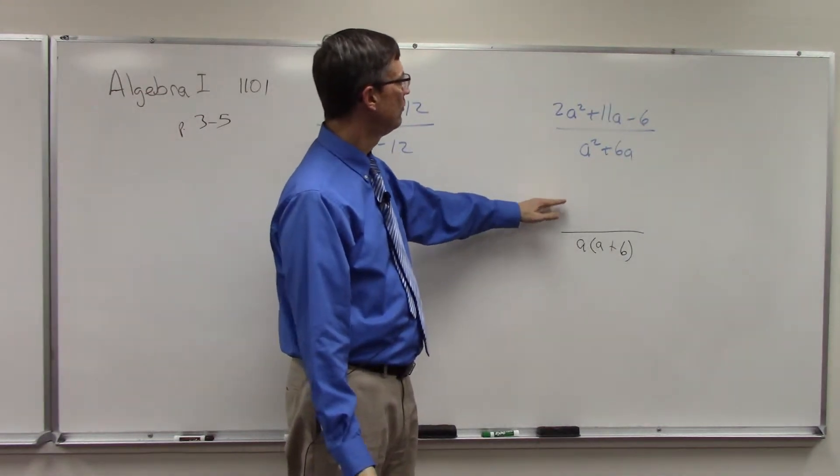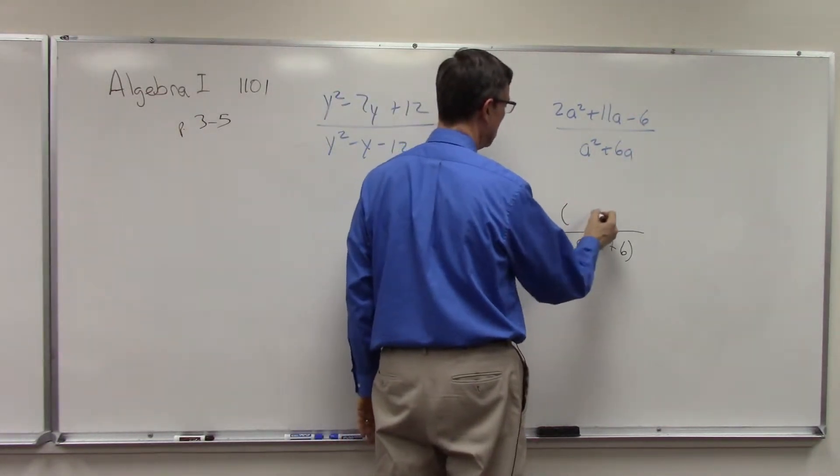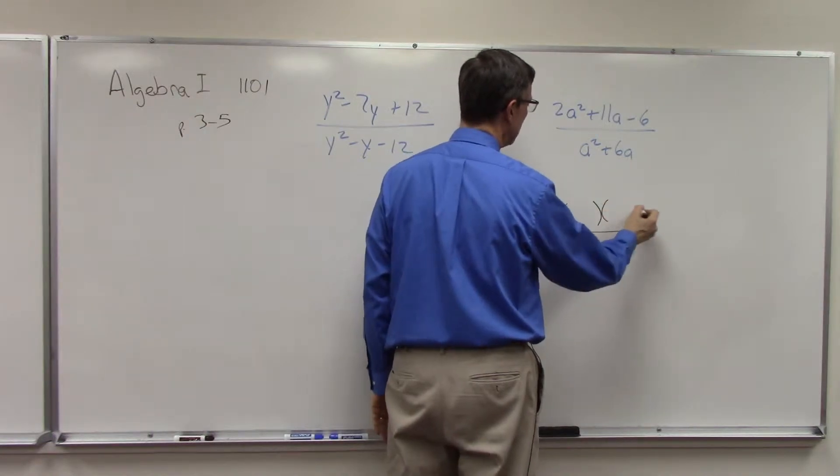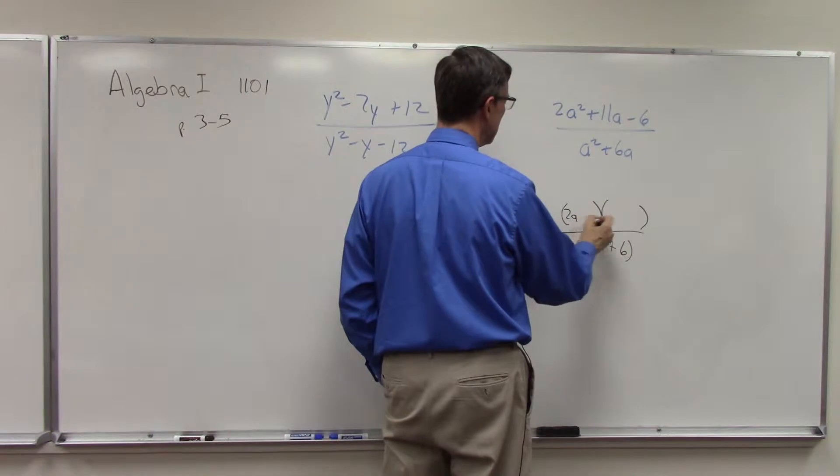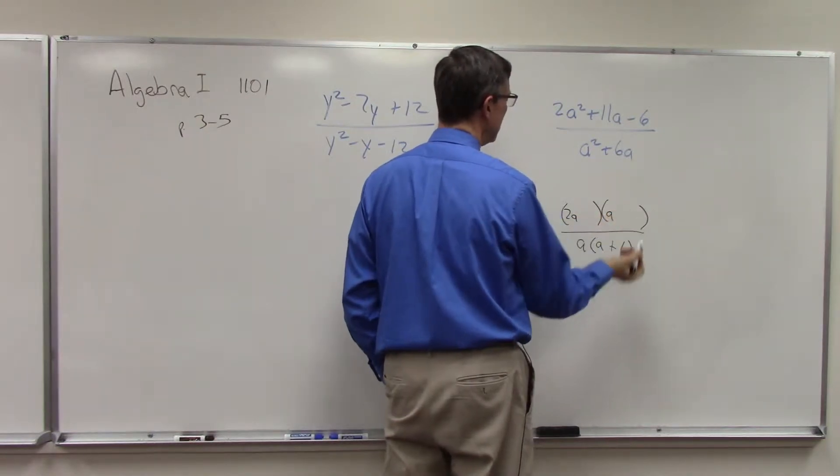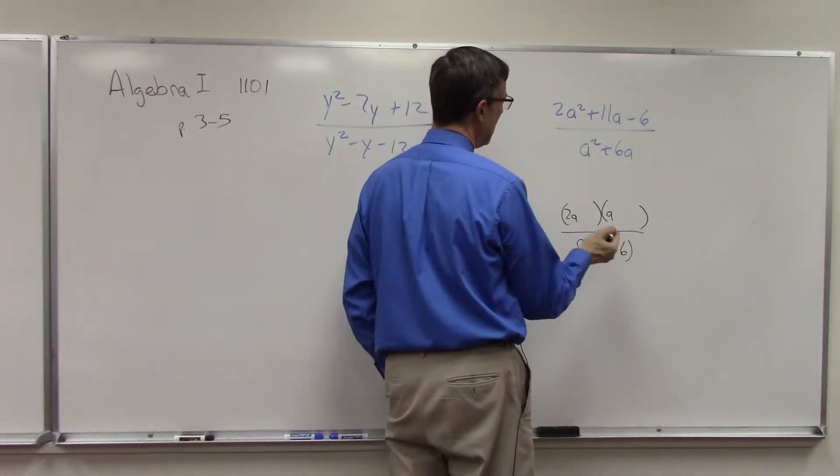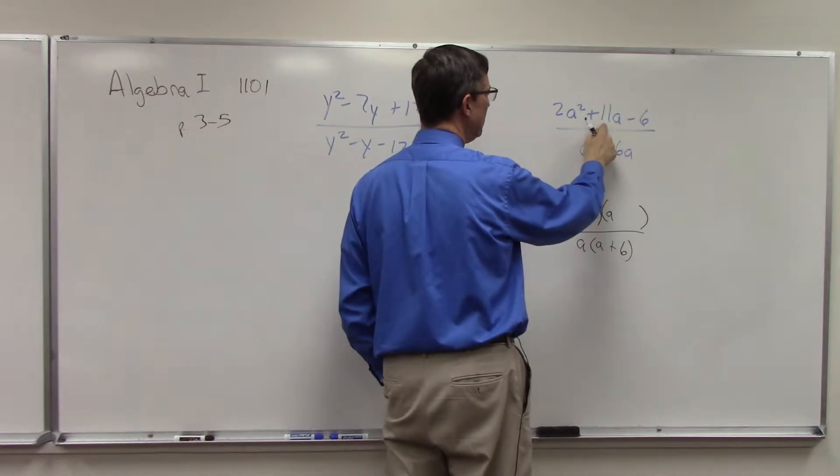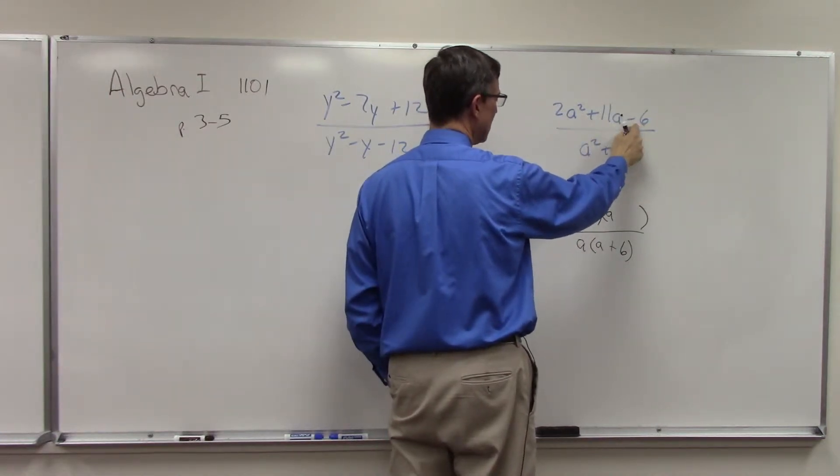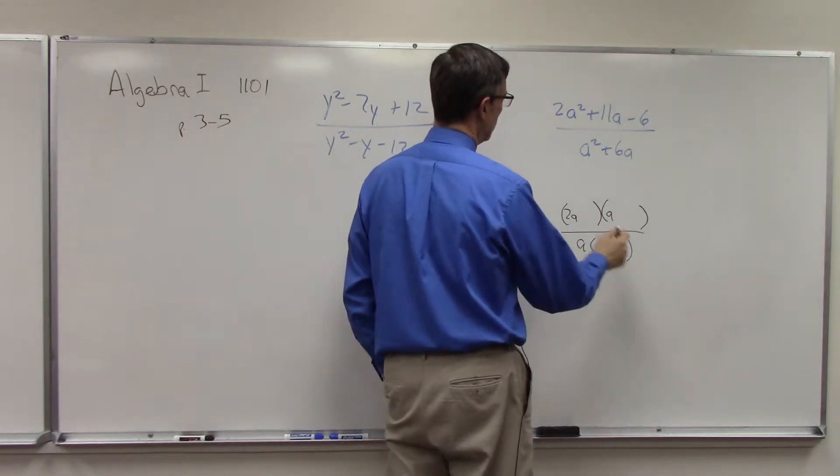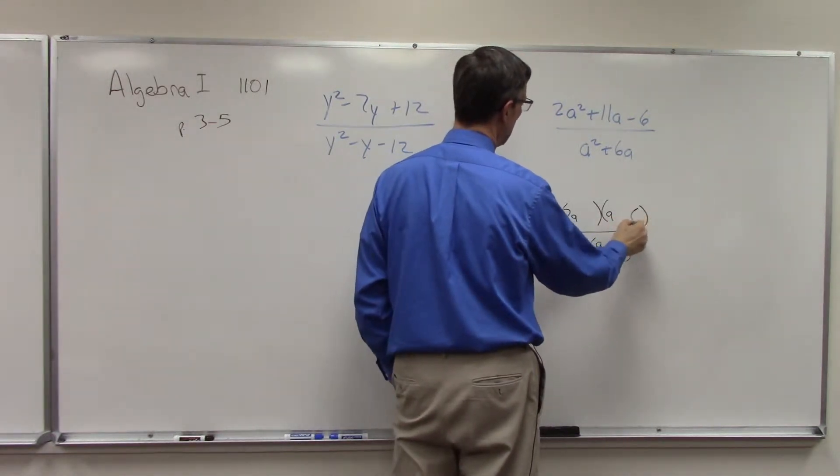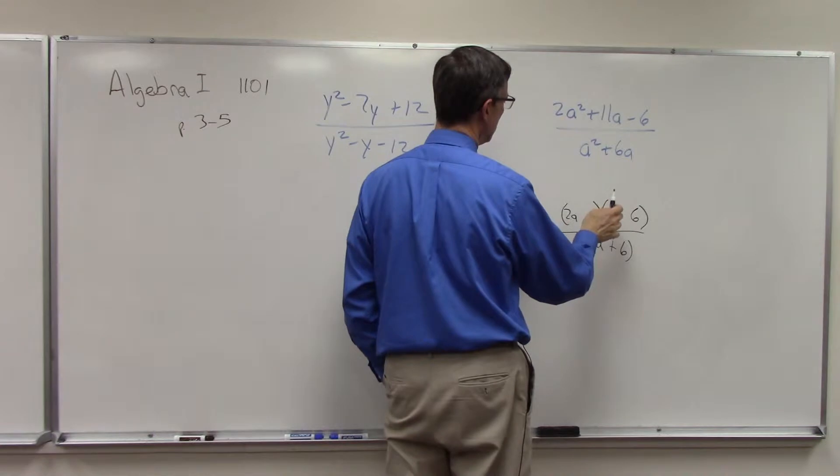All right, now we need to factor the top. And like I said in a previous video, we just have to kind of do some guessing. So a, a, and we want to end up with 11 in the middle, and we want to end up with 6 here on the end. So I'm going to try 6.